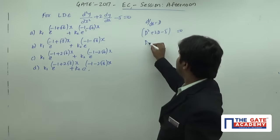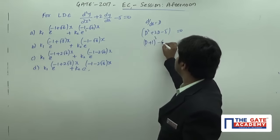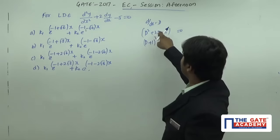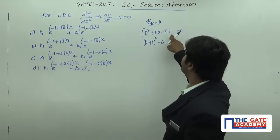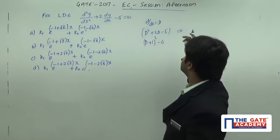I can write this one as equal to d plus 1 whole square minus 6, d square plus 2d plus 1 minus 1 minus 5. It is going to be d plus 1 whole square minus 6 equal to 0.